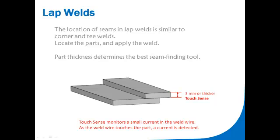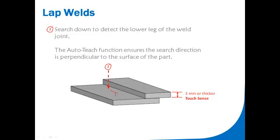Seam finding tools for lap joints are determined by the thickness of the upper plate or part. When the upper plate is 3 mm or thicker, TouchSensing can be used. Macro jobs make seam finding programming easier, resulting in more accurate joint location.